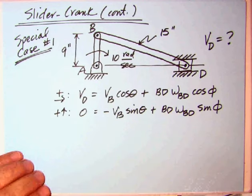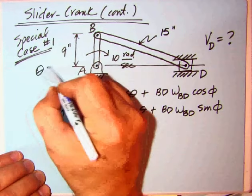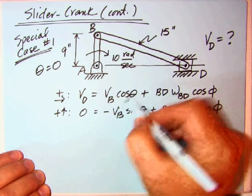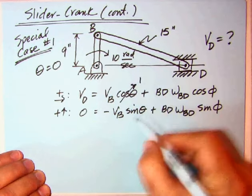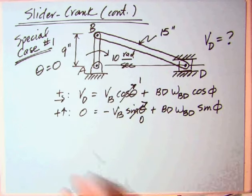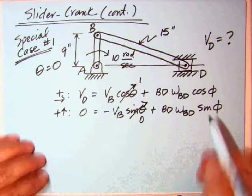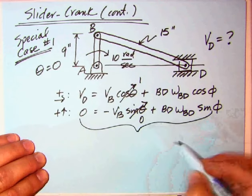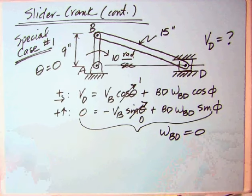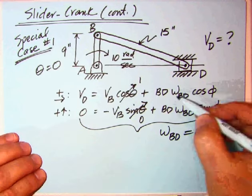In this particular case, theta equals zero. Our angle was from the vertical. So what happens here is this term becomes one, this term becomes zero. So in the second term, there's nothing else. BD is not zero, sine phi is not zero. So what happens is we come out with omega BD equals zero.